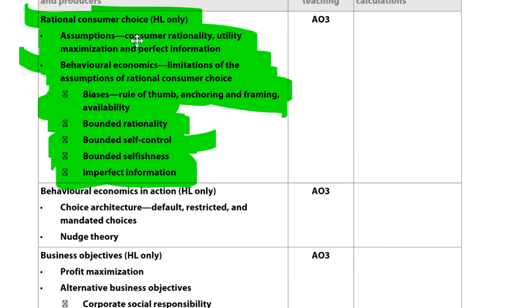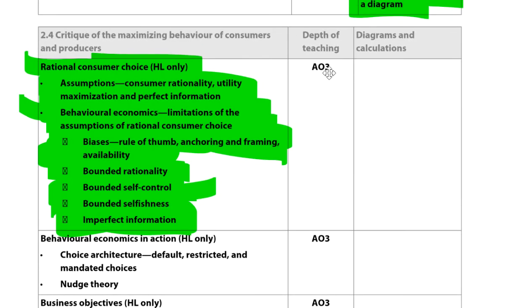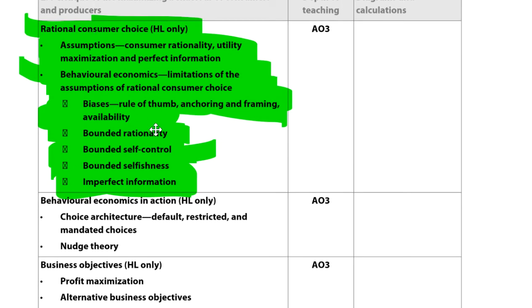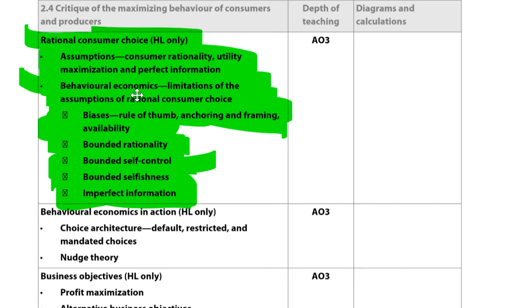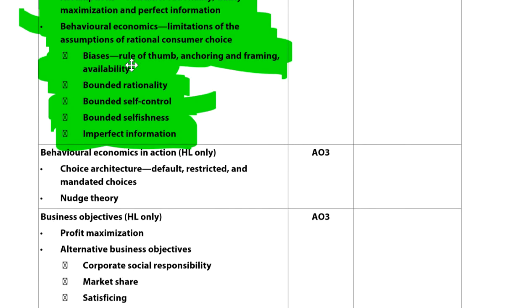These assumptions can be tested in paper one part A questions, where you may need to explain biases like anchoring, framing, or the limits of perfect information in consumer theory. Assessment objective three covers this area. You could also get paper three questions on these concepts, and you should be comfortable explaining them. Consumer rationality is quite applicable in real life — you can observe these biases in your own behavior.